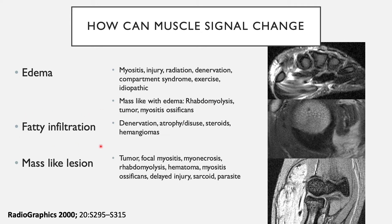You can have fatty infiltration, which typically happens with denervation, atrophy, disuse, steroids, and hemangiomas. This is typically seen as T1 and T2 hyperintense signal within the muscle, which then remains dark on the fluid-sensitive fat suppressed images.